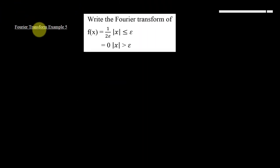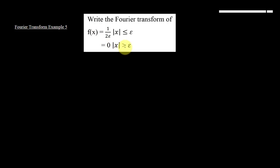Assalamu alaikum doostow, aaj hum discus kar rahe hai Fourier transform example 5, which says: write the Fourier transform of f(x) = 1/(2ε) when x ≤ ε, and f(x) = 0 when x > ε.